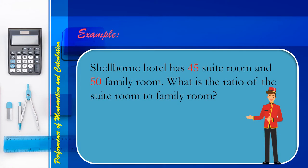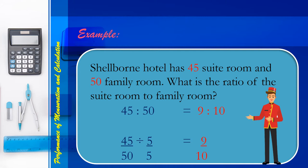Another example: a hotel has 45 suite rooms and 50 family rooms. What is the ratio of suite rooms to family rooms? The ratio is 45 is to 50. To get the lowest term, we find the greatest common factor of 45 and 50, which is 5. Dividing both: 45 ÷ 5 = 9 and 50 ÷ 5 = 10. Therefore, the lowest term of 45 to 50 is 9 over 10.